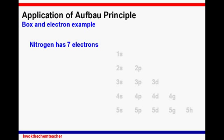We will be talking about an application of the Aufbau Principle using the box and electron diagram. I have chosen nitrogen as my example, as it contains 7 electrons. After filling the 1S subshell, nitrogen has five electrons left to fill. Notice that when we write two electrons found in the same orbital, they are in opposite directions, which denotes that the electrons are in opposite spin. A half arrow represents one electron.